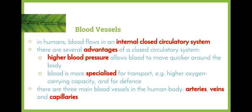We've already had a look at blood, so now we're going to be looking at the vessels that contain them. In humans, blood flows in an internal closed circulatory system. You recall in the year 11 topics we looked at the difference between open and closed circulatory systems, and we see that there are several advantages of a closed circulatory system in comparison to an open one.